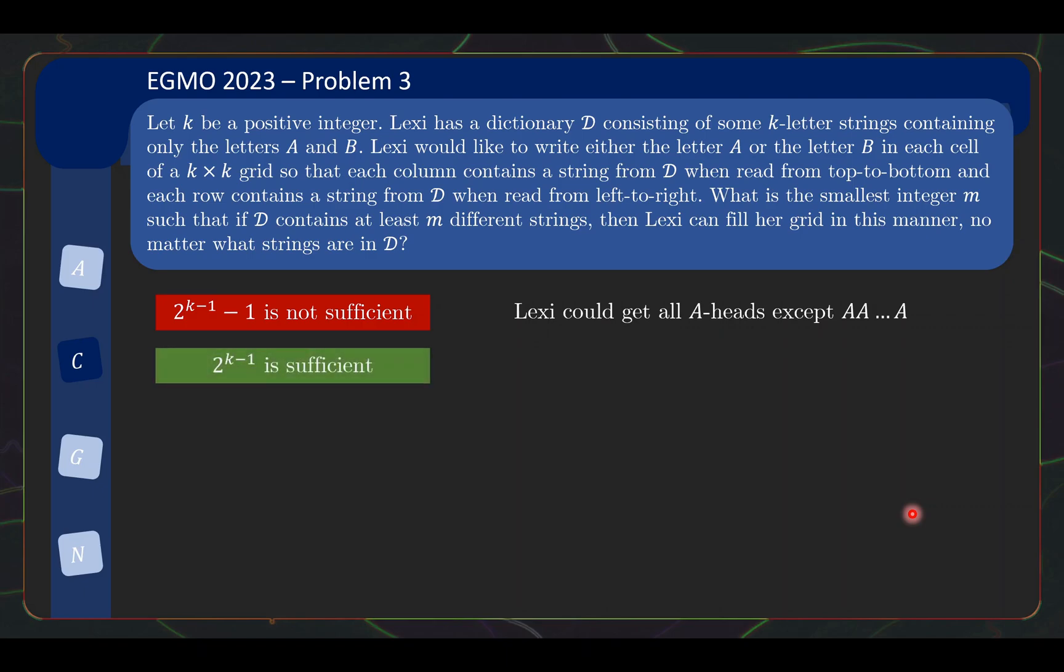Now on the other hand, we are going to show that 2 to the k minus 1 is sufficient for you to always win. The idea is if you get all A's or all B's, you instantly win. So let's make our life difficult in the worst case scenario where we don't have this. Then the remaining words can be put into 2 to the k minus 1 minus 1 pairs of complements. By pigeonhole principle, there must be at least a pair of complements.